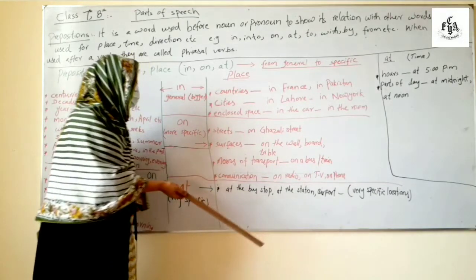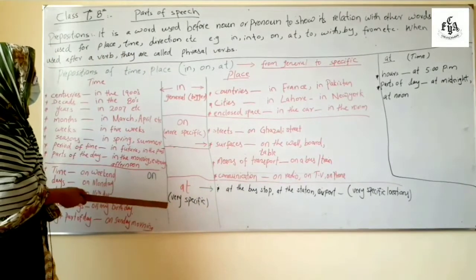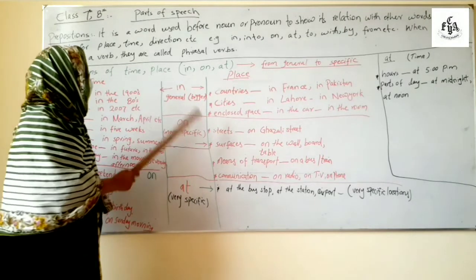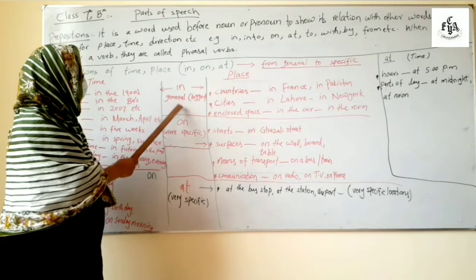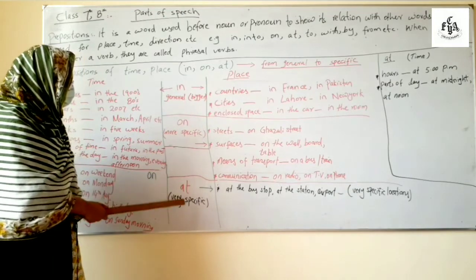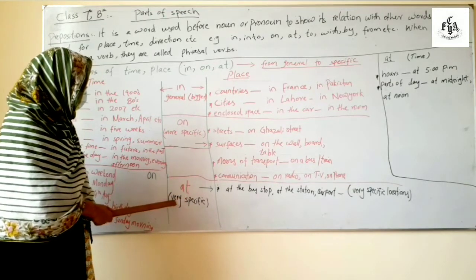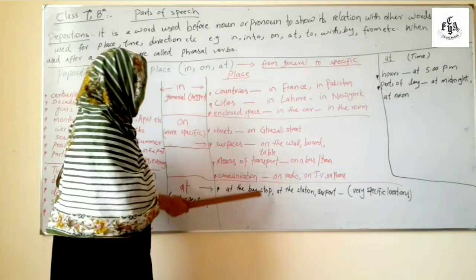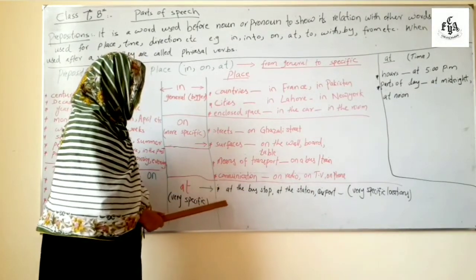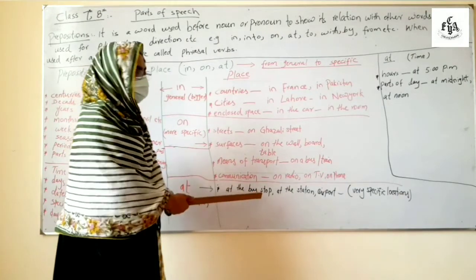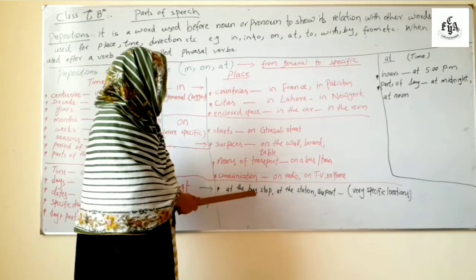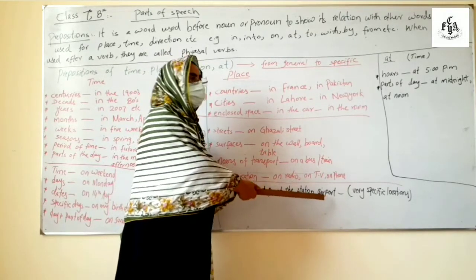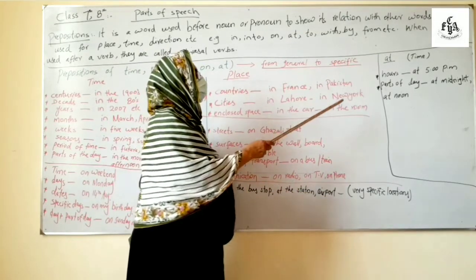Now at, very specific. See I told you it comes from bigger to smaller. Now for very specific time and for very specific place. For place, for example at the bus stop, at the station, at the airport.